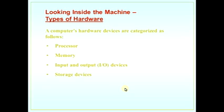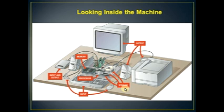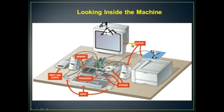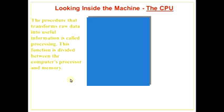Let's see about the types of hardware. Hardware has been categorized as follows: processor, memory, input/output devices, and storage devices. Now let's look inside the machine. Data travels through cables, goes to the processor, and comes back out. The output devices, storage, processor, and memory are all shown here.